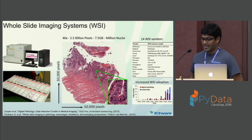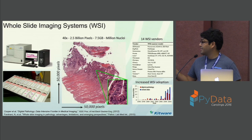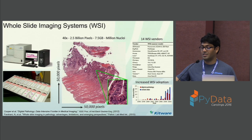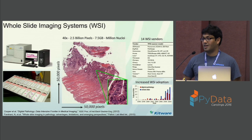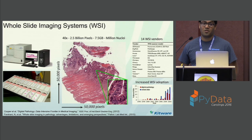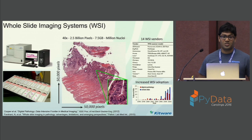Recently, whole slide imaging systems were developed. These basically scan the entire slide and produce huge 2D images. At the base resolution, at 40x magnification, the image is about 50,000 pixels across and 50,000 pixels tall — that's about 2.5 billion pixels. In uncompressed format, it's about 7.5 gigabytes of data. Each of these images typically contains about a million nuclei that you want to analyze.